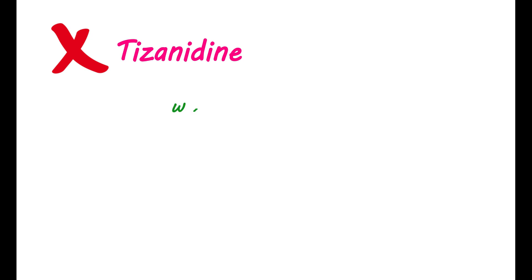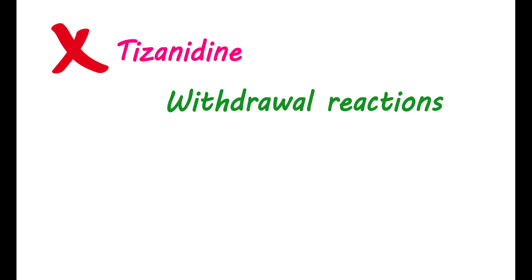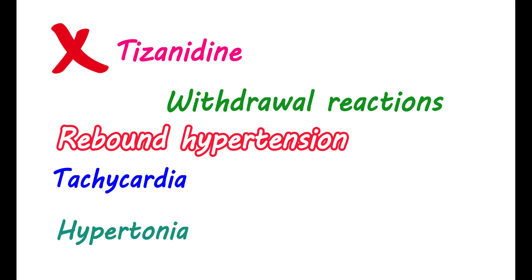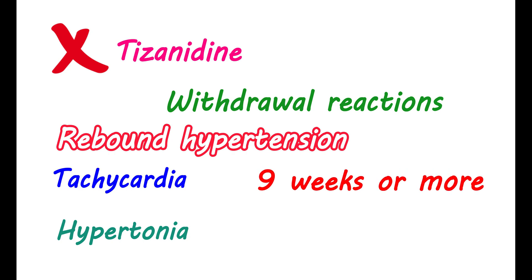Never stop Tizanidine suddenly, as it can produce withdrawal reactions including rebound hypertension. Since this medication reduces blood pressure, sudden stopping may cause elevated blood pressure, increased heart rate (tachycardia), and increased vascular tone (hypertonia). To avoid withdrawal effects, the dose should be reduced gradually over longer periods — such as 9 weeks or more, particularly when at higher doses — decreasing by 2 to 4mg per day.